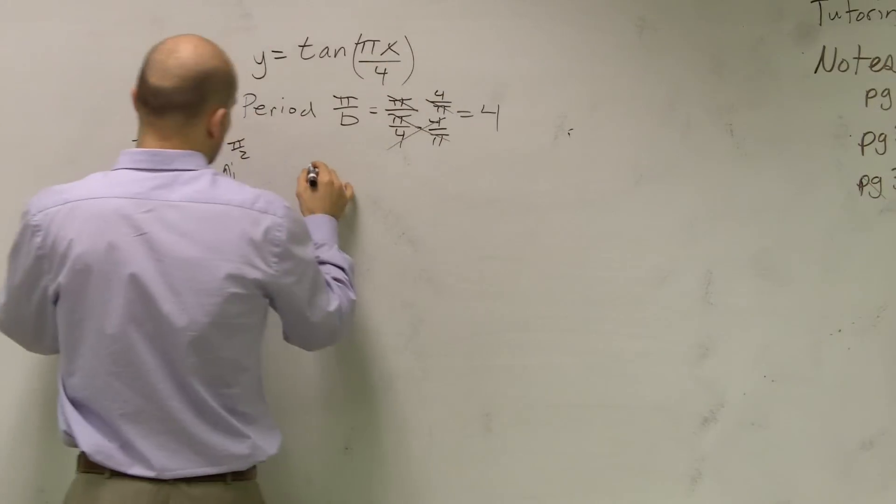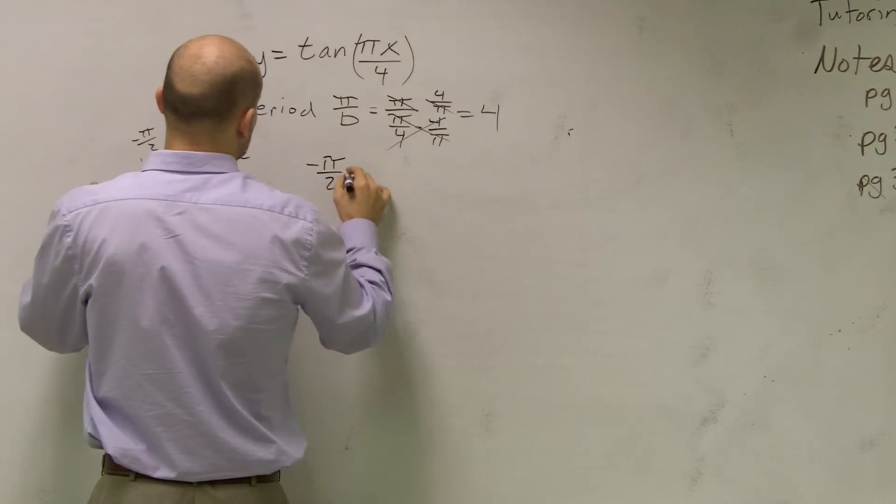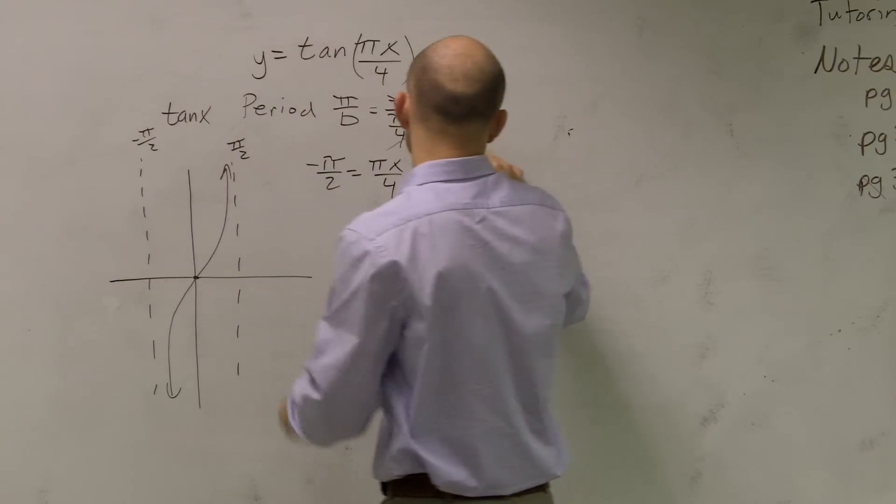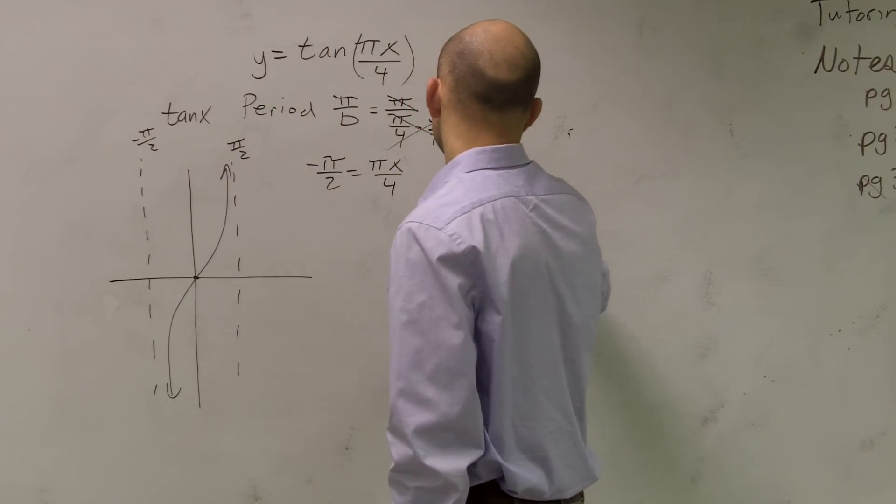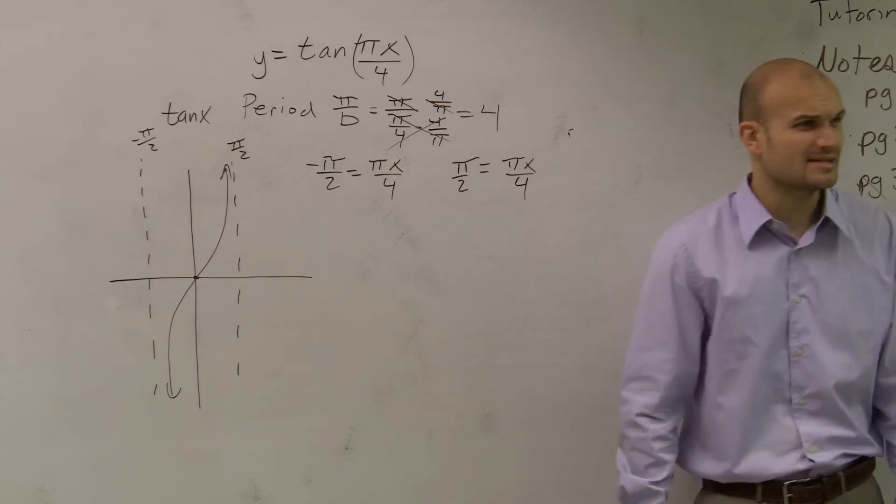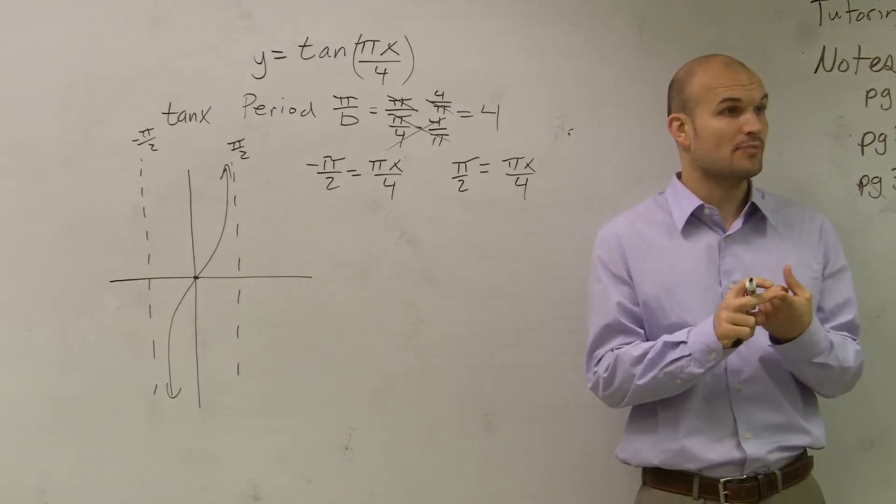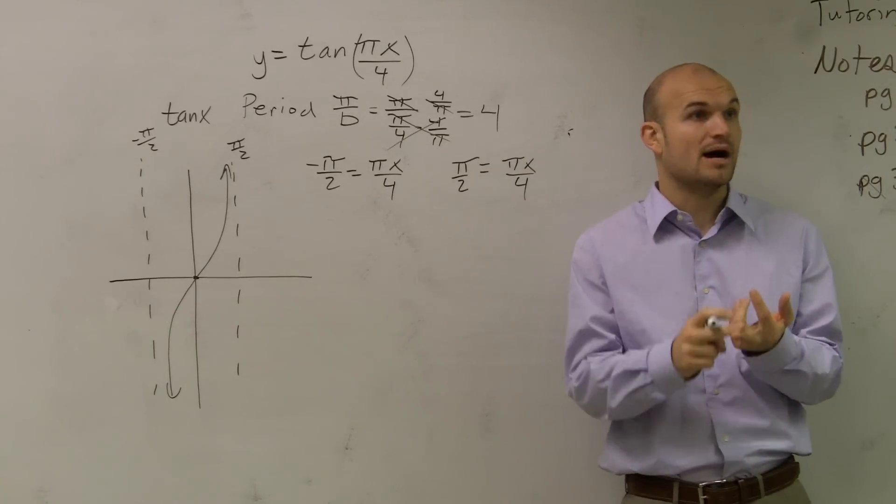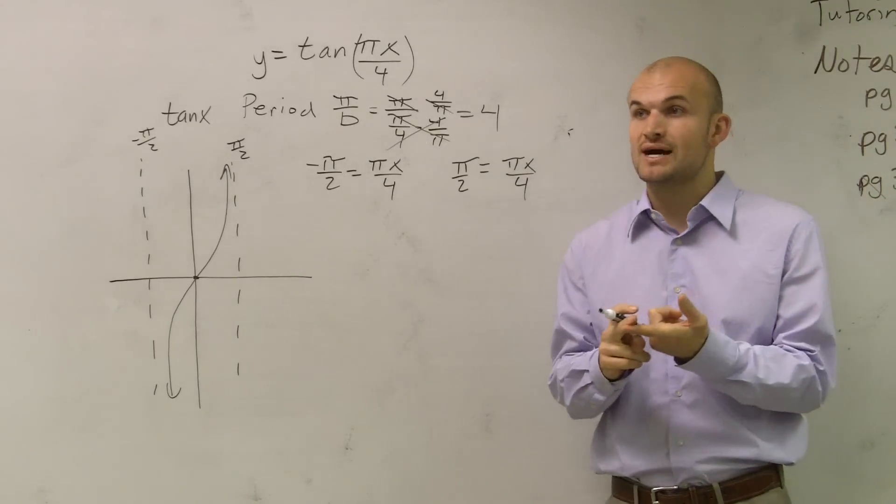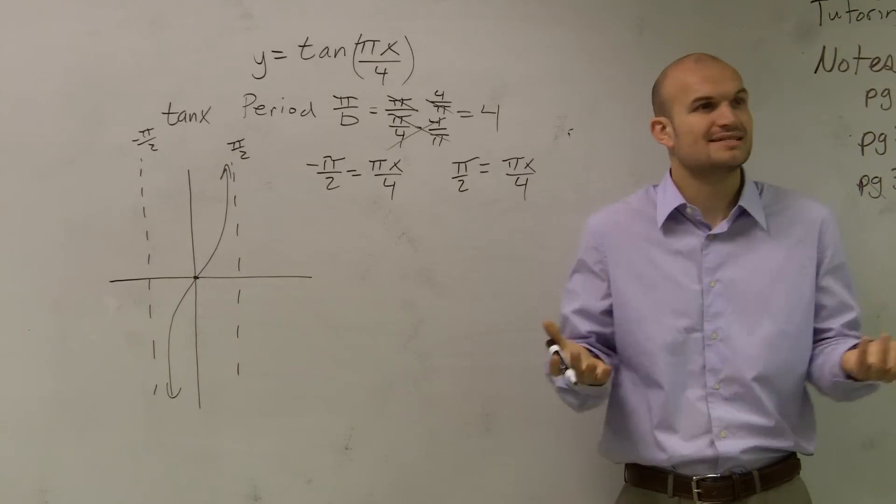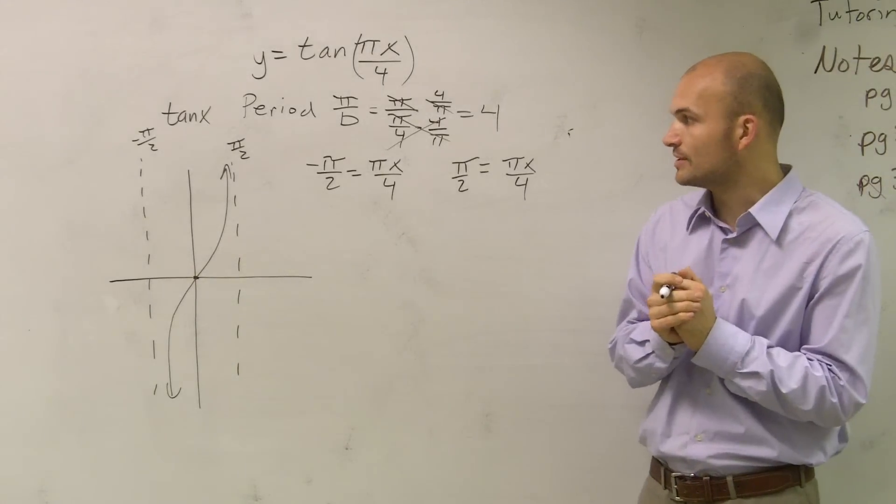We set whatever's inside my function equal to the two endpoints. So take -π/2 = πx/4 and π/2 = πx/4. For cotangent, your endpoints are 0 and π. For tangent, it's -π/2 and π/2. For sine and cosine, it's 0 and 2π. You can do the exact same thing to find your endpoints.